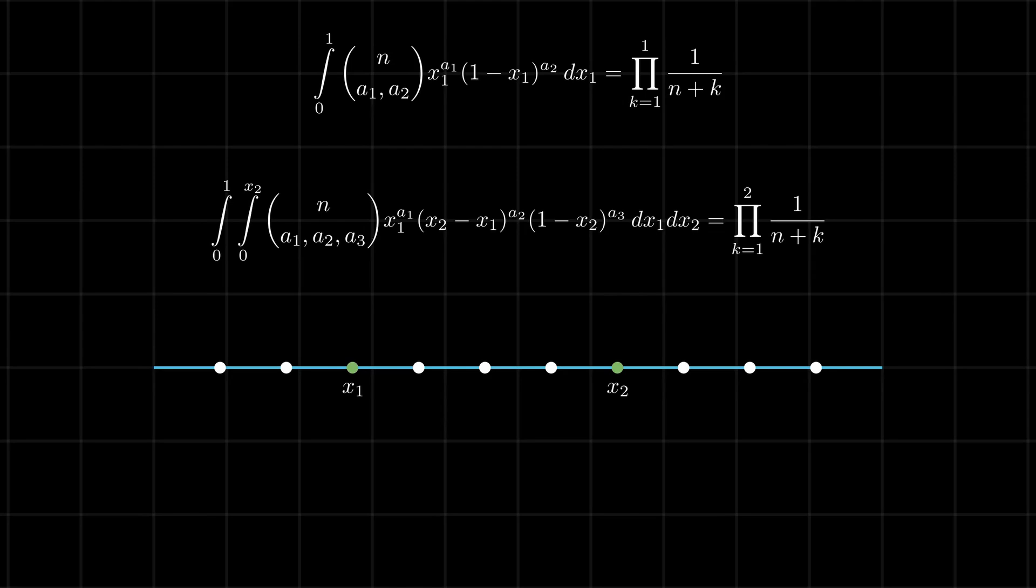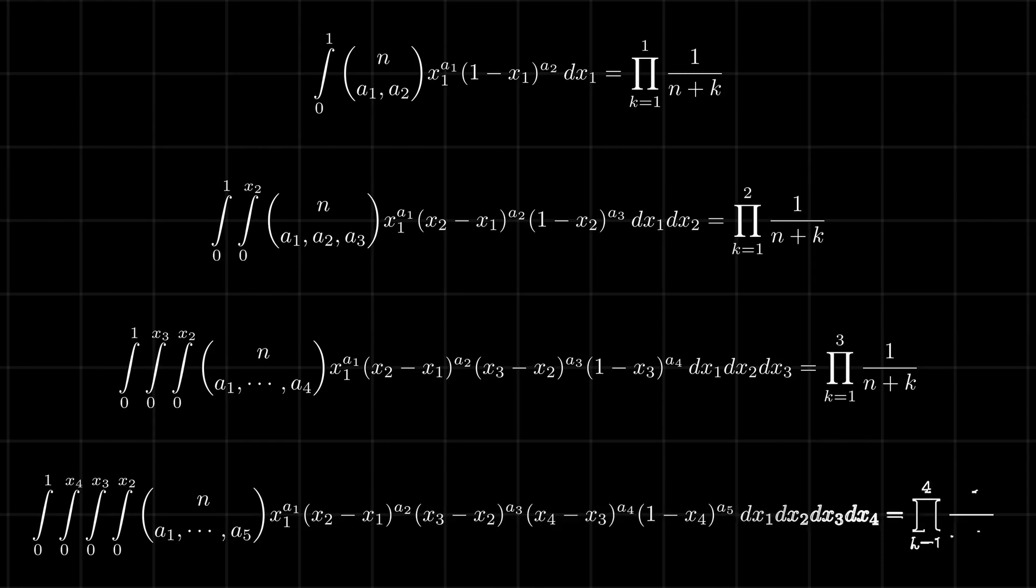But with the combinatorial argument, the same is also given by 1 by n plus 1 times n plus 2. Continuing this line of reasoning, we can solve this list of n variable multi-integrals in closed form without using any calculus at all.